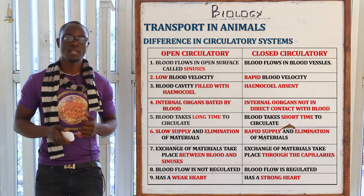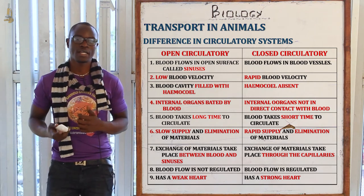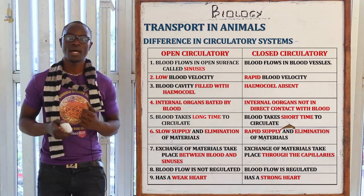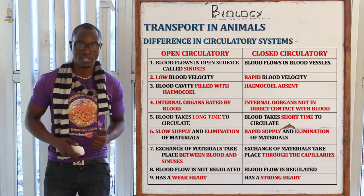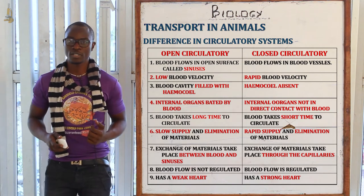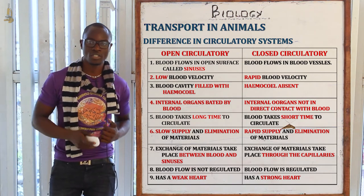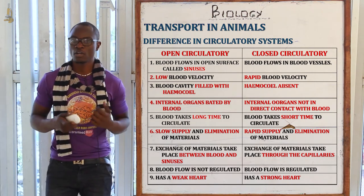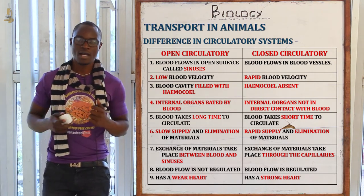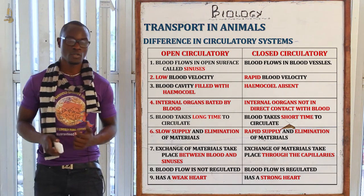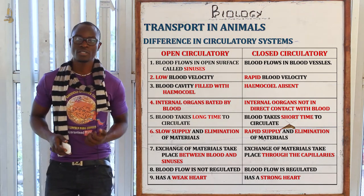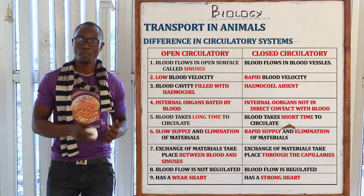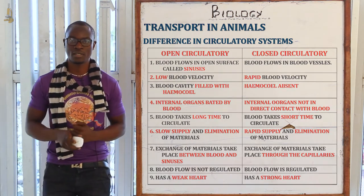In the closed circulatory system, it is only the capillaries that connect the blood to the organs. In the open circulatory system, blood takes a very long time to circulate the body, while in the closed circulatory system blood takes a very short time. As a result, organisms with an open circulatory system are not as active as those with a closed circulatory system, where organisms are much more active.